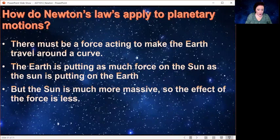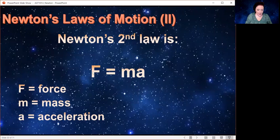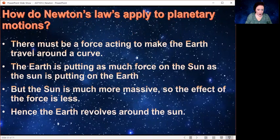But the sun is much more massive, so the effect of the force is less. Remember Newton's second law. So when we talk about there's this force F, but when the mass is the earth, it's going to accelerate quite a lot because the mass is small. But when the mass is the sun, the acceleration is very small. So they're both feeling the same force, but for the earth, it has a much bigger effect because of earth's much lower mass. And so by applying Newton's three laws, we can understand why the earth is revolving around the sun and not the sun revolving around the earth.